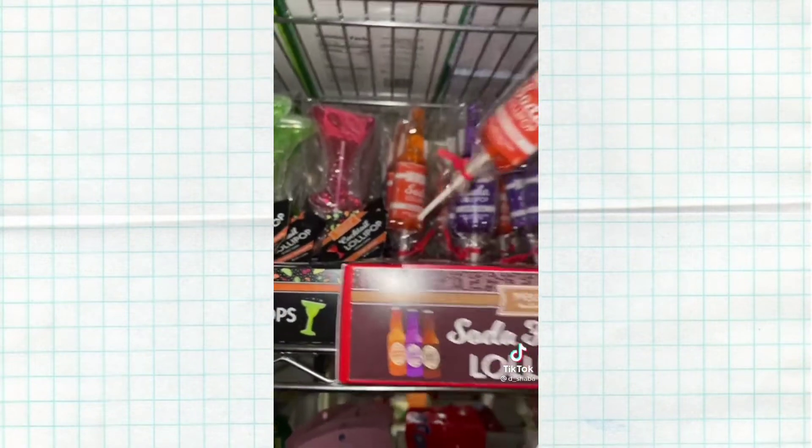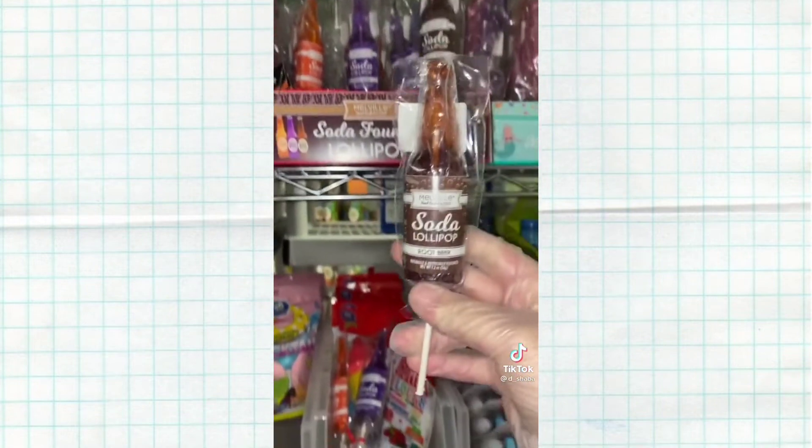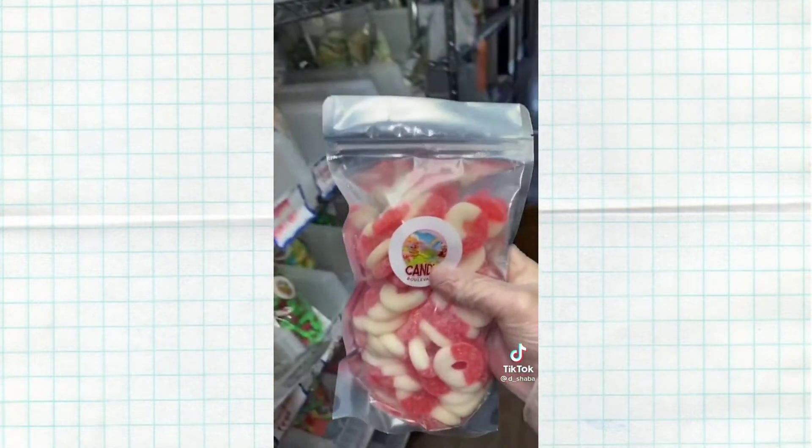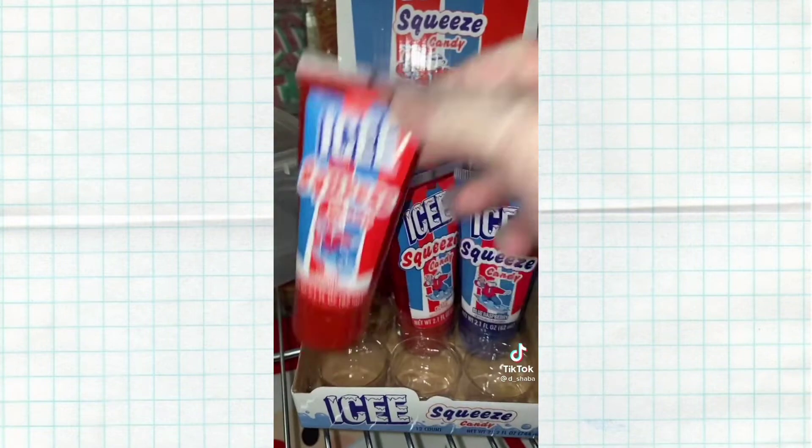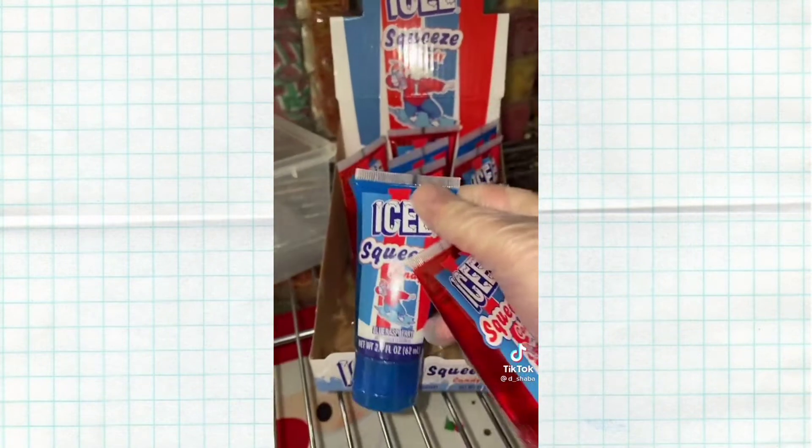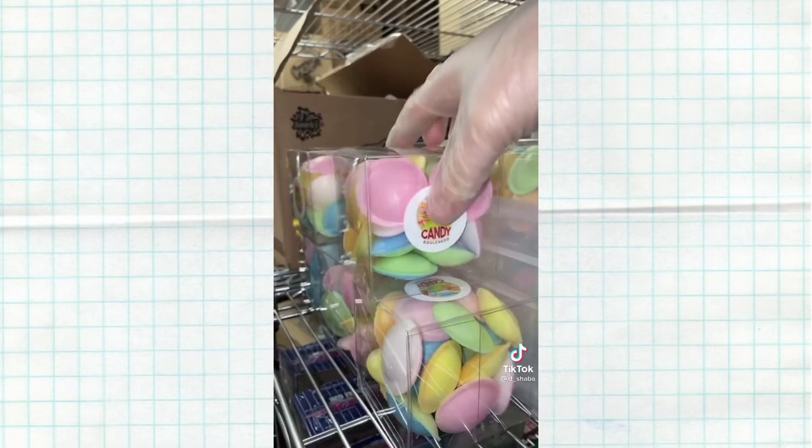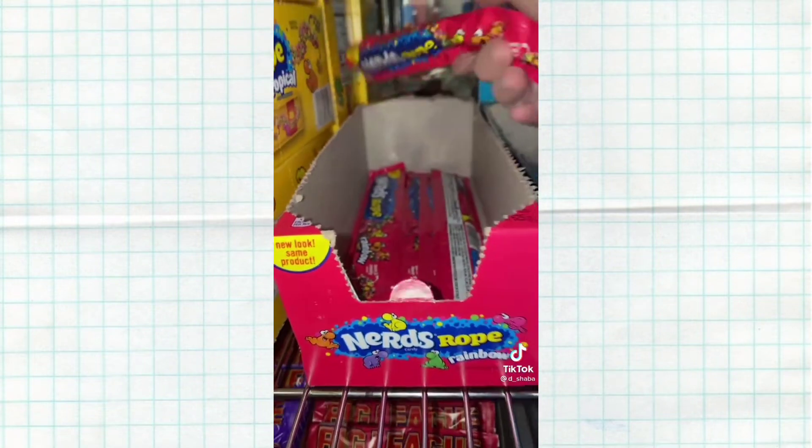One 4D bundle, one watermelon rings bag, one earth gummy single, one icy squeeze candy bundle, one strawberry banana sour belts bag, one flying saucer, one nerds rope rainbow.